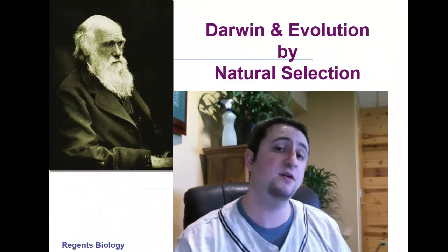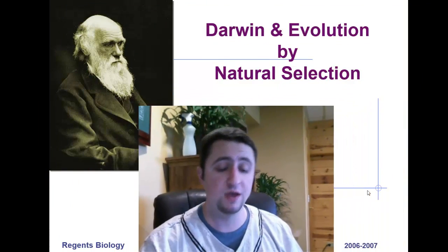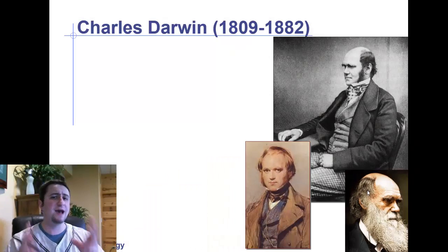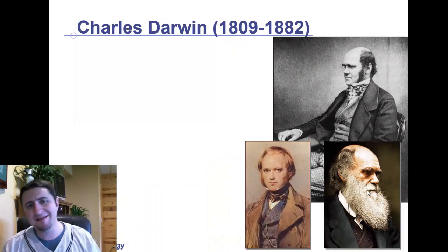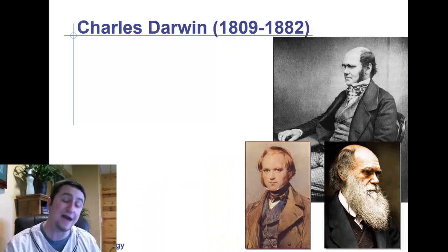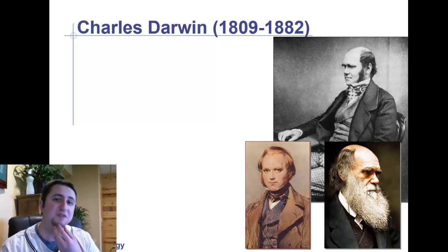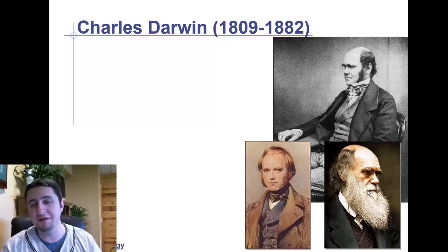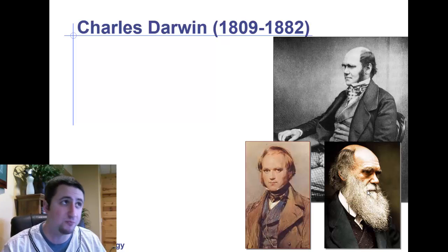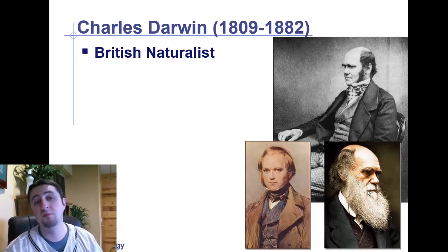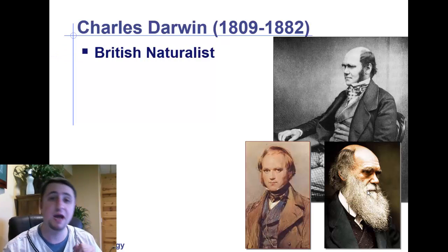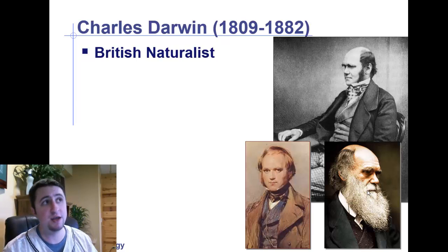Hey there guys, it's Mr. Herbst here and today our focus is going to be on Charles Darwin and his theory of natural selection. Charles Darwin was this guy. He lived in the 1800s and towards the latter portion of his life, he grew a real big beard. And because of that beard, he kind of looks pretty prominent in photographs, pretty recognizable. He was British and he was a naturalist, which means he liked to study nature.